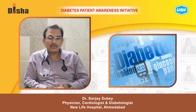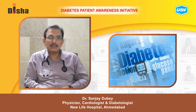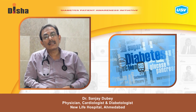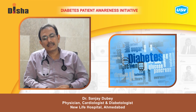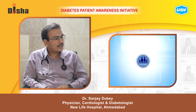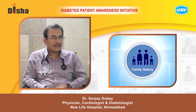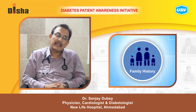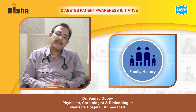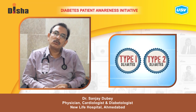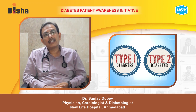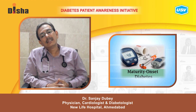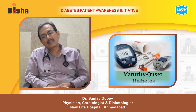I would like to give some questions and answers about the disease diabetes. First, diabetes is a family disease. There are mainly two types of diabetes: Type 1 diabetes, Type 2 diabetes, and a third type — maturity onset diabetes.